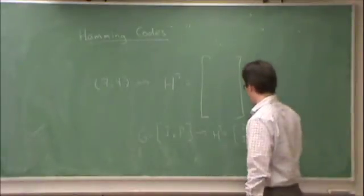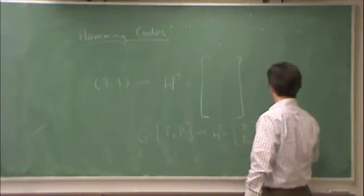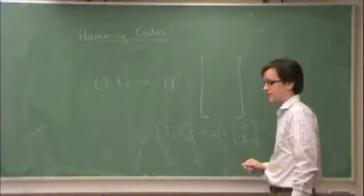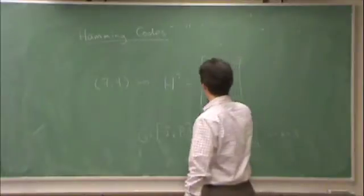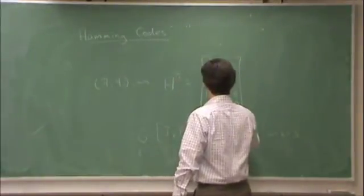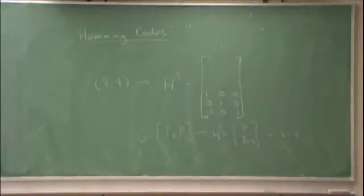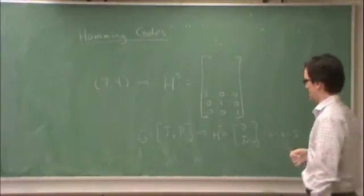What that means is that in this case N minus K is 3, so we fill the bottom 3 rows here with the identity matrix of order 3. So that's 3 of the 7 rows taken care of.